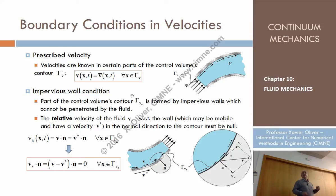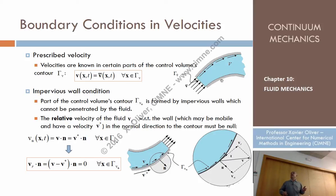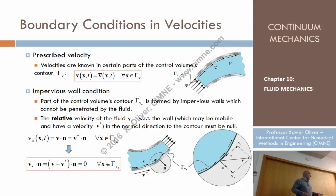In typical fluids, part of the boundary of the control volume may be impervious — impermeable — meaning it cannot be trespassed by the particles. Particles inside cannot move outside. The velocity at such boundaries must be tangent to the boundary, because any normal component would cause particles to move from inside to outside. So the condition is: velocity dot normal equals zero.